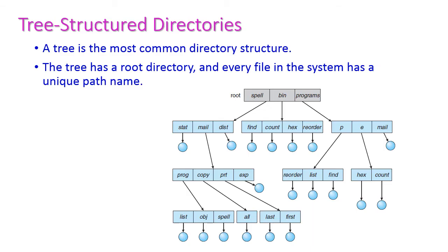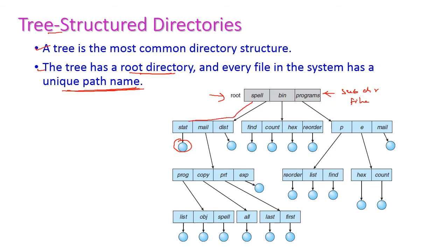Tree structure directories are the most common directory structure used today. There is a root directory, and every file in the system has a unique path name. The root directory contains its own files as well as subdirectories, and every file has a unique path name from the root. The path shows how each file is connected and located.